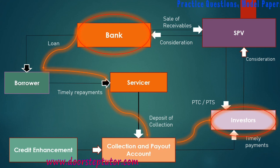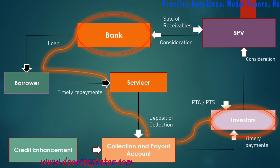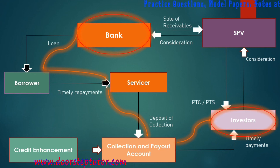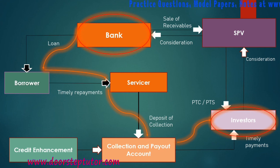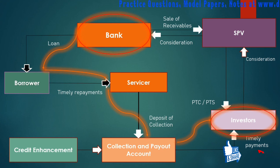The bank is saved if a third party takes the guarantee. If there is no third party and defaulting happens — like in the case of Nirav Modi — then banks have to close down, just like PNB. I hope you understand the whole process of asset securitization.